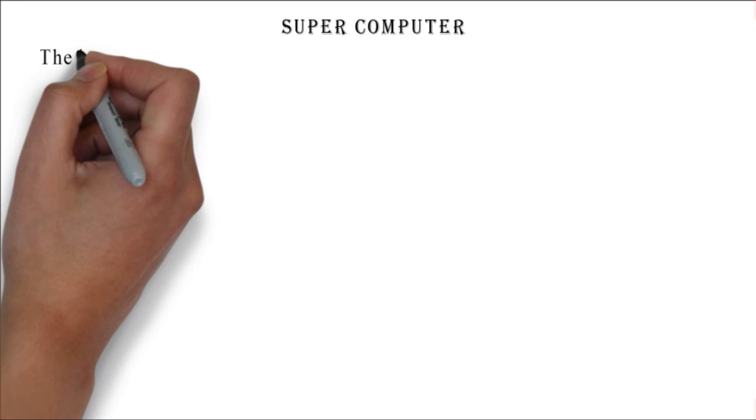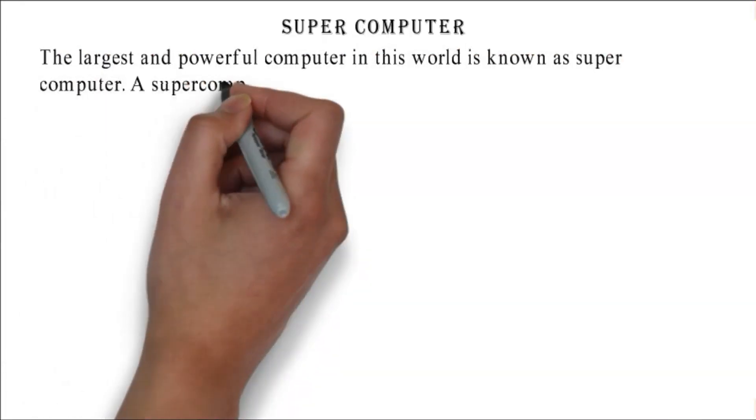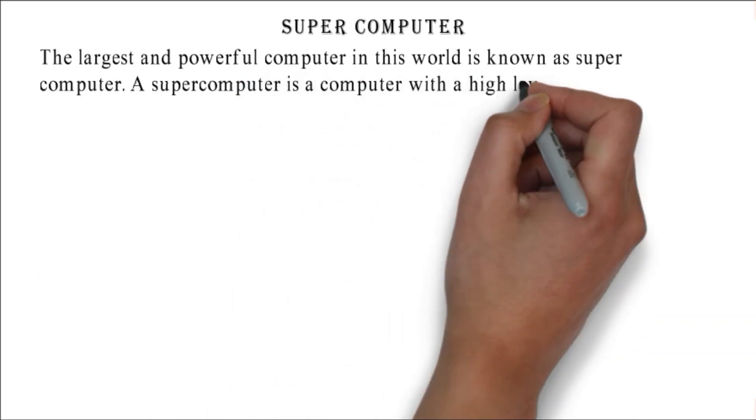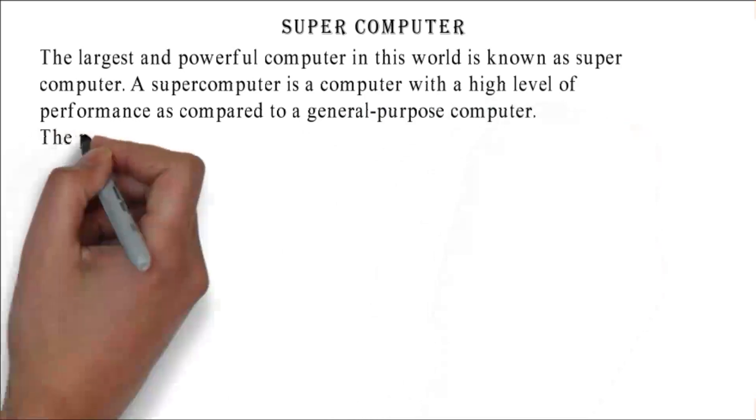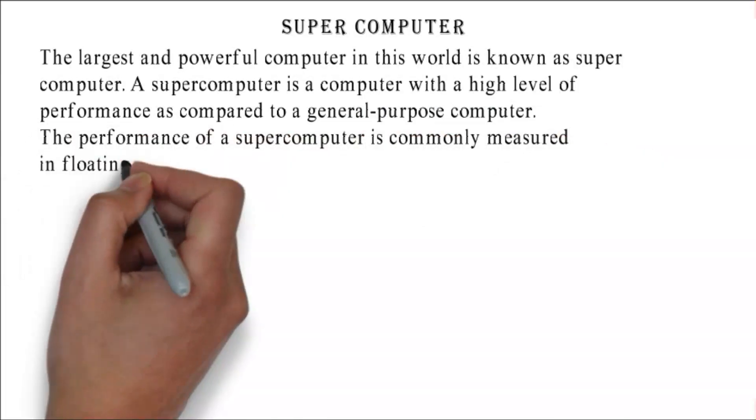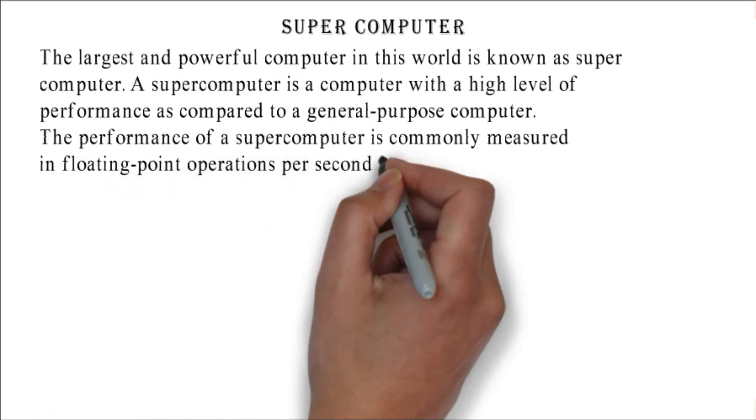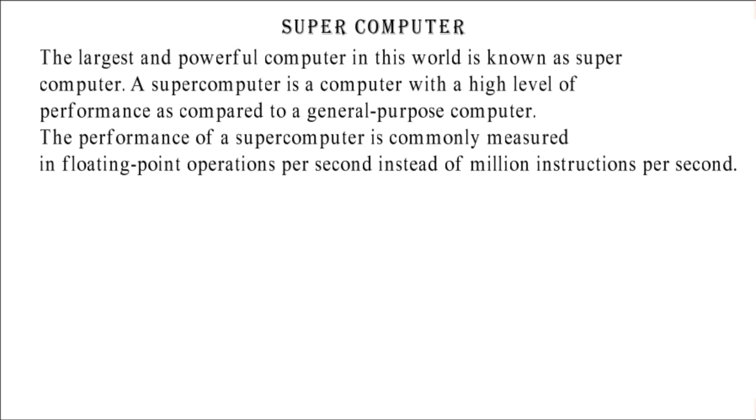Supercomputer: the largest and most powerful computer in this world is known as supercomputer. A supercomputer is a computer with a high level of performance as compared to a general-purpose computer. The performance of a supercomputer is commonly measured in floating-point operations per second instead of million instructions per second.